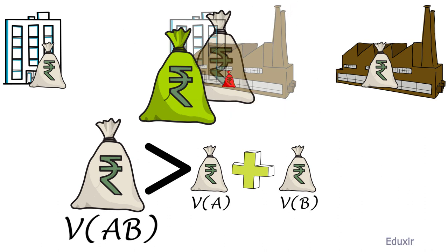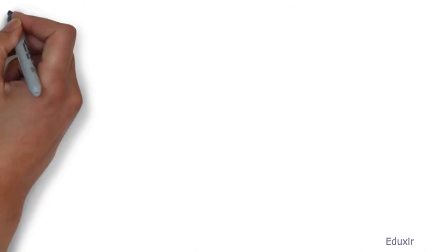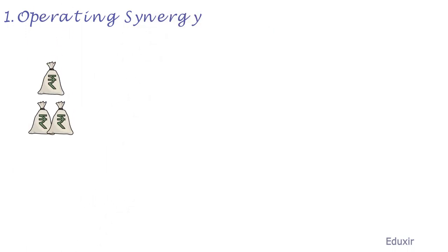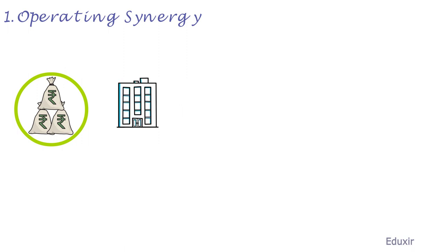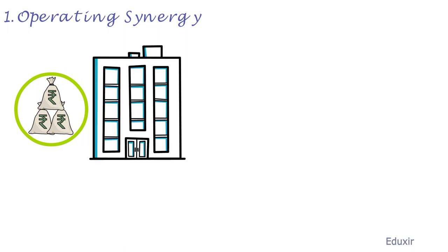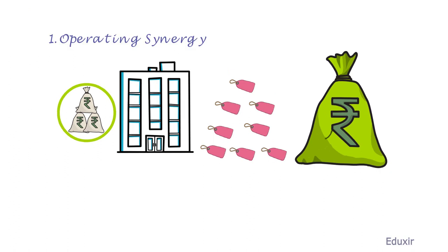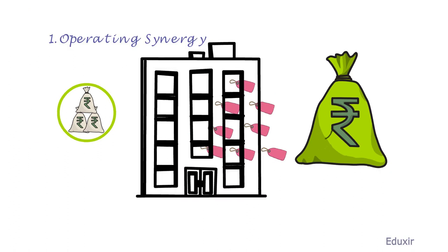Synergy can take place in the following forms. The first one is Operating Synergy. This is the cost savings that resulted from the economies of scale or increased sales and profits. It results in the overall development of the firm.